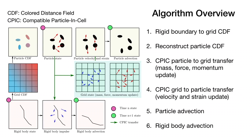With particles and grid CDF information, CPIC rasterizes particle mass, momentum, and MLS-MPM force to compatible grid nodes. This allows particles on different sides of boundaries to be completely decoupled. During grid-to-particle transfer, each particle gathers a least squares estimation of its local velocity field from compatible nodes.